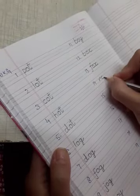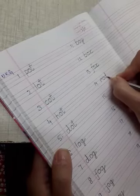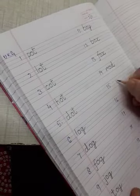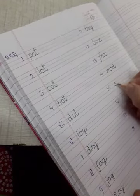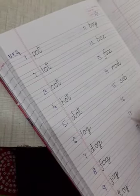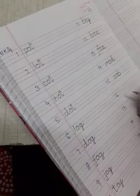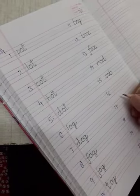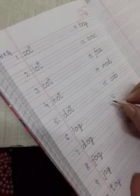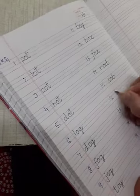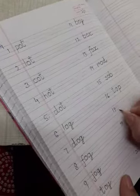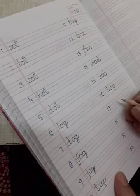R-O-D rod. Rod is danda. Next number, sob, S-O-B sob. Sob means rona. Top, top is lattu. Lattu is a toy also. Hop.